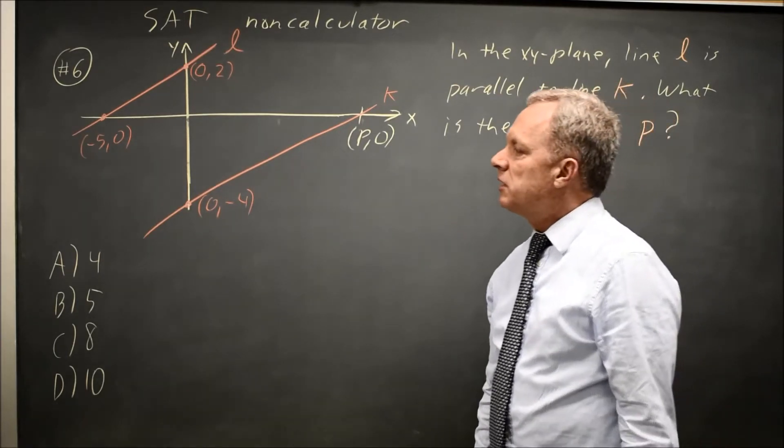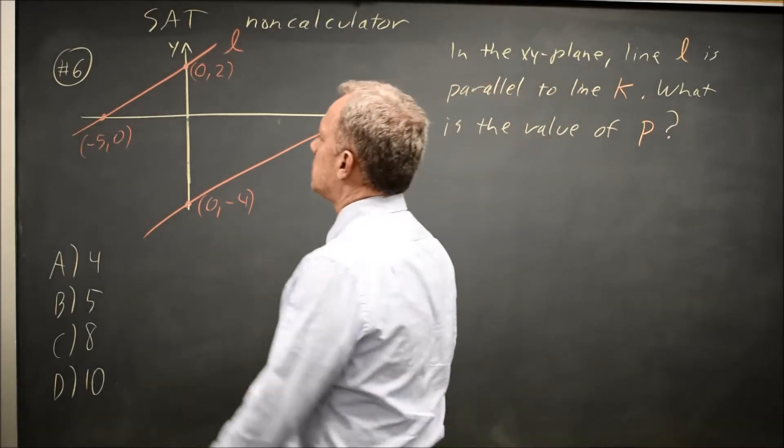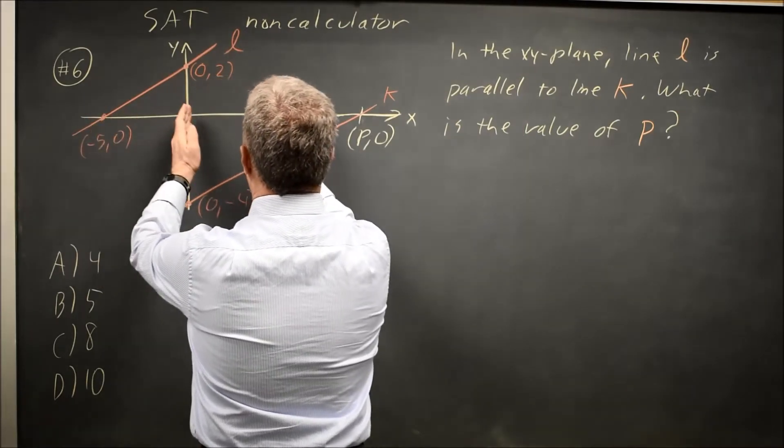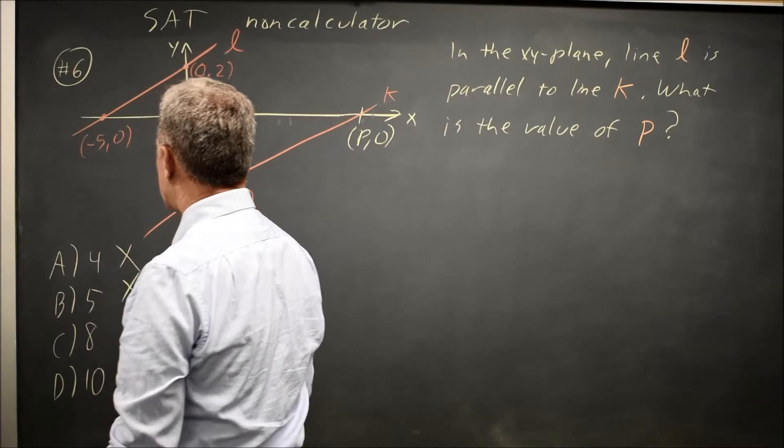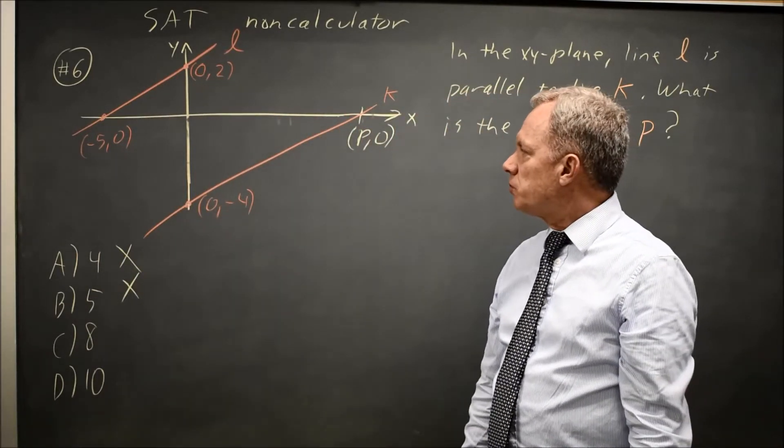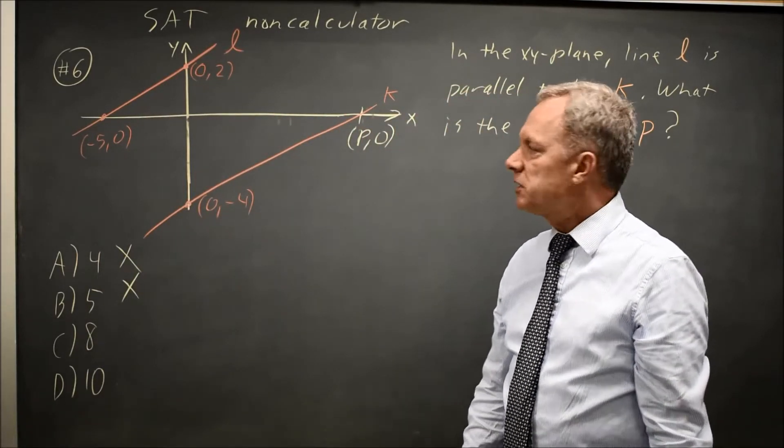The first thing I would do is, since this is to scale, and this distance is much less than the distance to K, choices A and B are wrong. We're just trying to figure out, is P equal to 8 or 10?